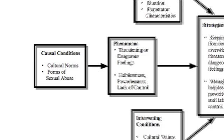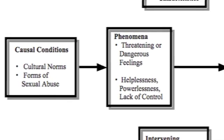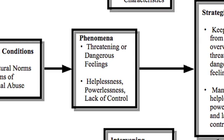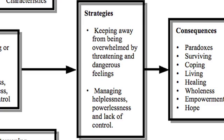You can see they start with certain causal conditions: the cultural norms, the forms of sexual abuse, and so on, in the families where these women were. That leads to the central phenomenon — the actual abuse itself, the threatening or dangerous feelings they had to deal with, their own feelings of helplessness, powerlessness, lack of control. And clearly there were then strategies for how to deal with this, both at the time and later on in their lives — dealing with dangerous feelings and managing their own feelings of helplessness and powerlessness.